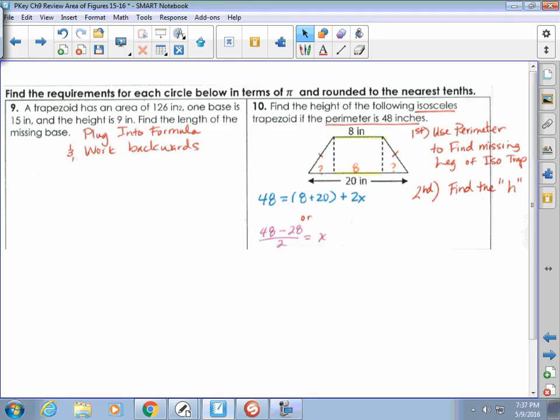Alright, for the next page, for 9 through 16, 9 and 10 are test alike. I will be asking you to work backwards and find a missing part using the formula because this is the area of a trapezoid.